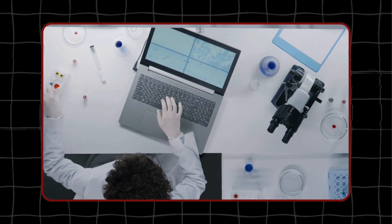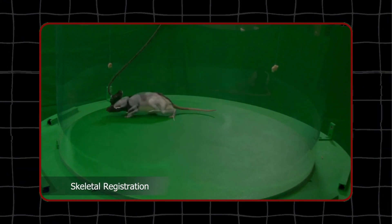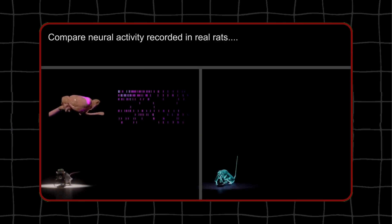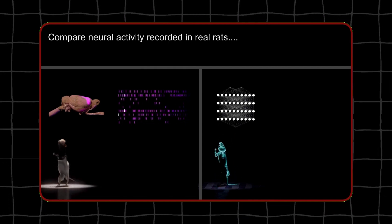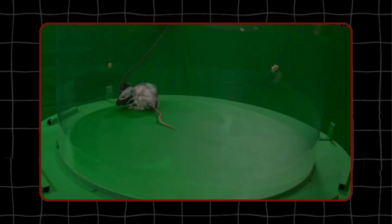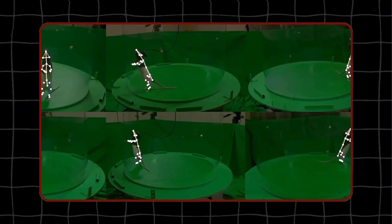Another important discovery came from studying how random changes in the virtual brain's activity affected the rats' movements. Clear patterns showed how these neural fluctuations led to specific movement changes. This revealed how the brain codes information. Because the virtual system was fully observable and controllable, researchers were able to gain these insights.